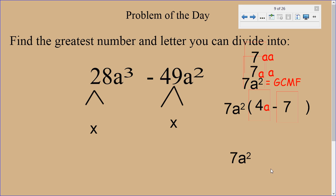And so that would be our answer. So our answer is 7 A squared, and that is your GCMF.